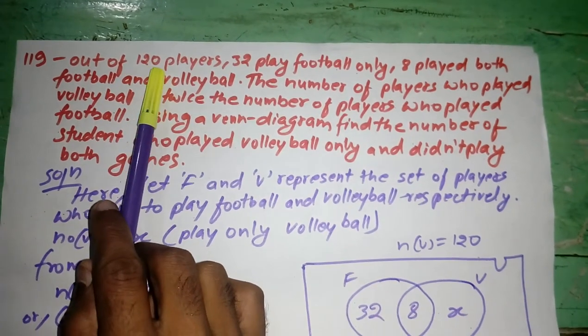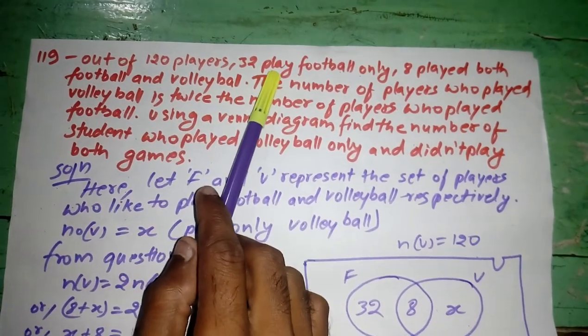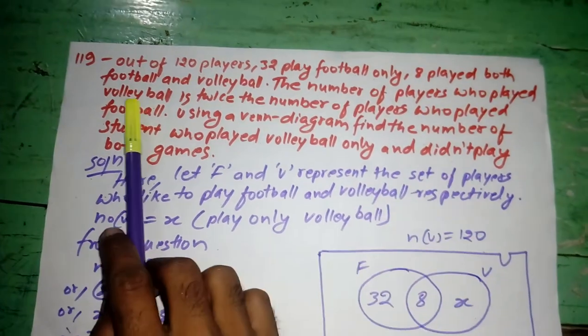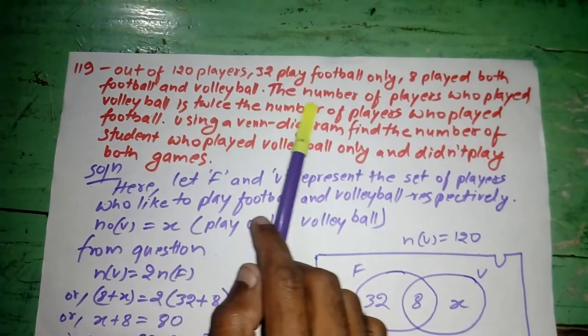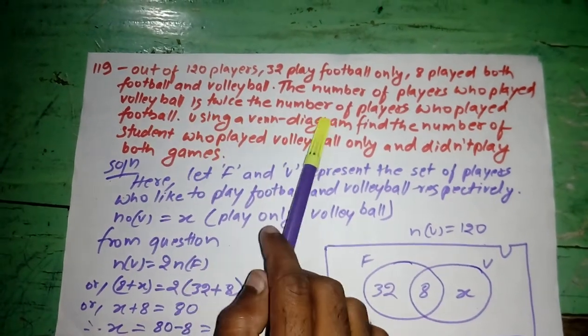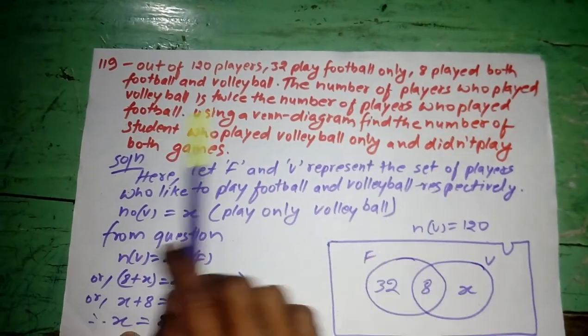Out of 120 players, 32 play football only, 8 players played both football and volleyball. The number of players who played volleyball is twice the number of players who played football.